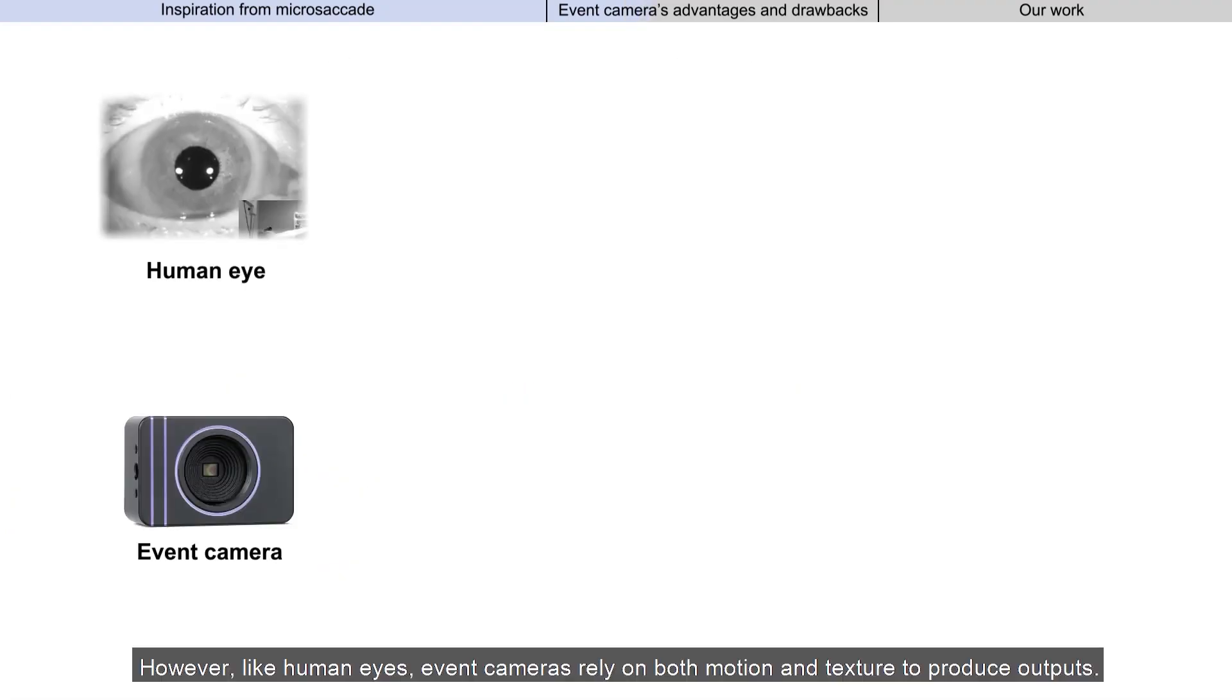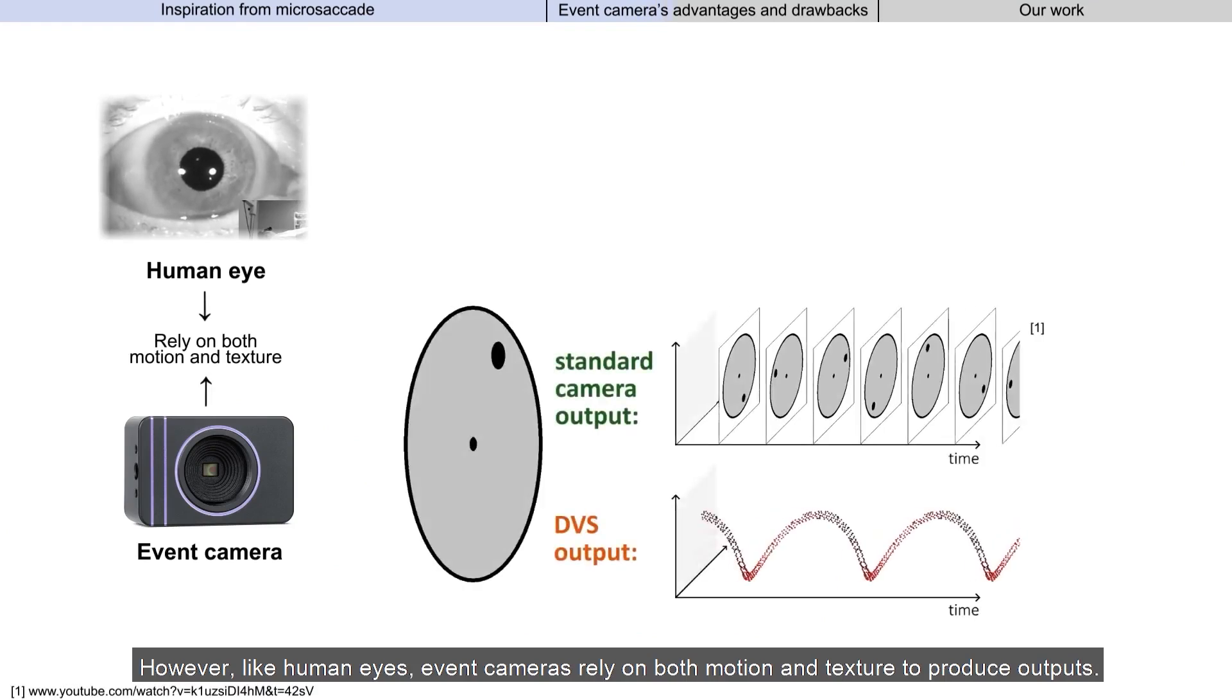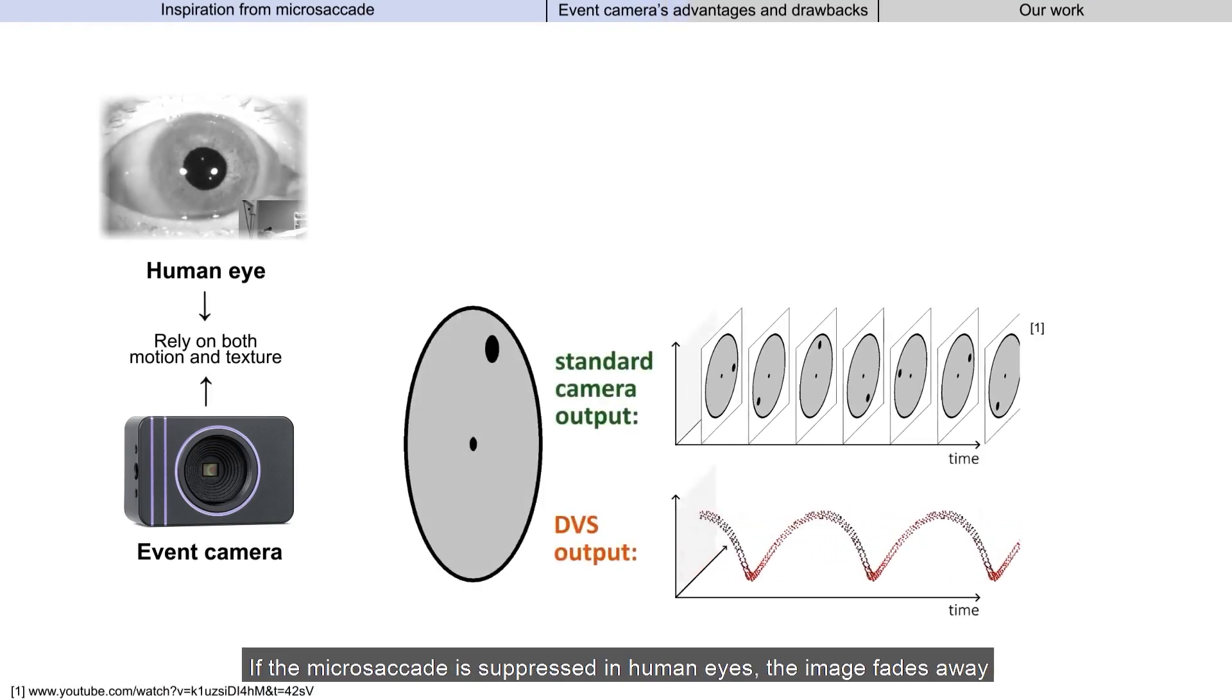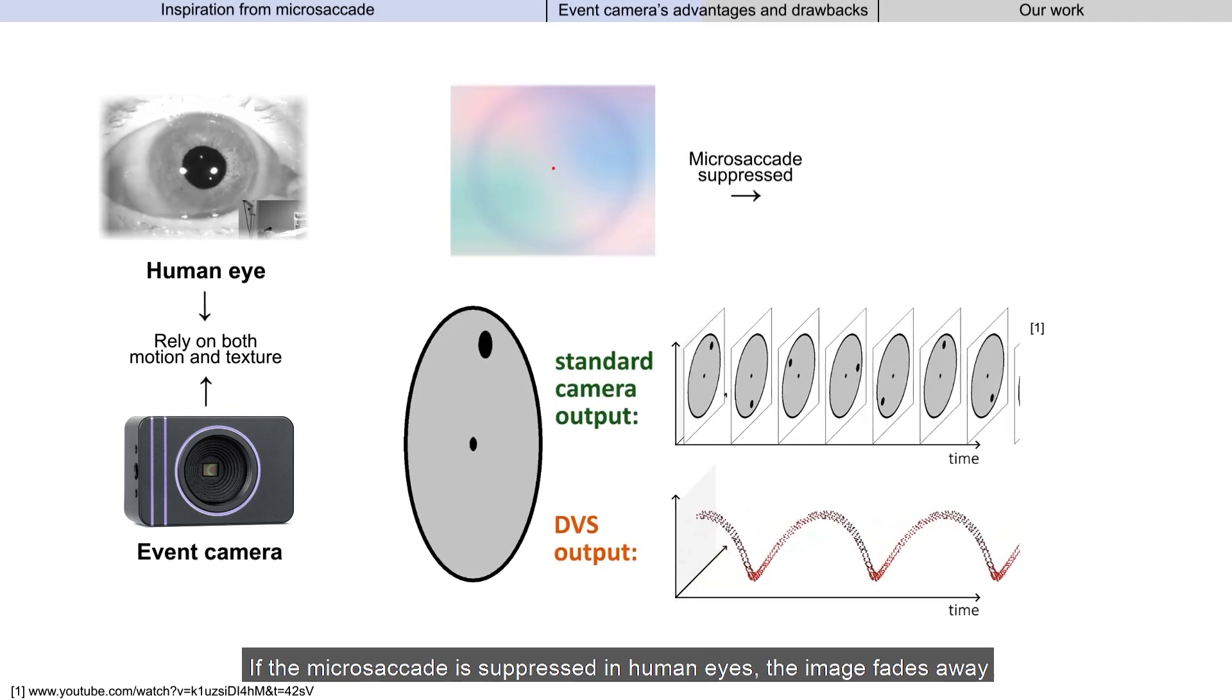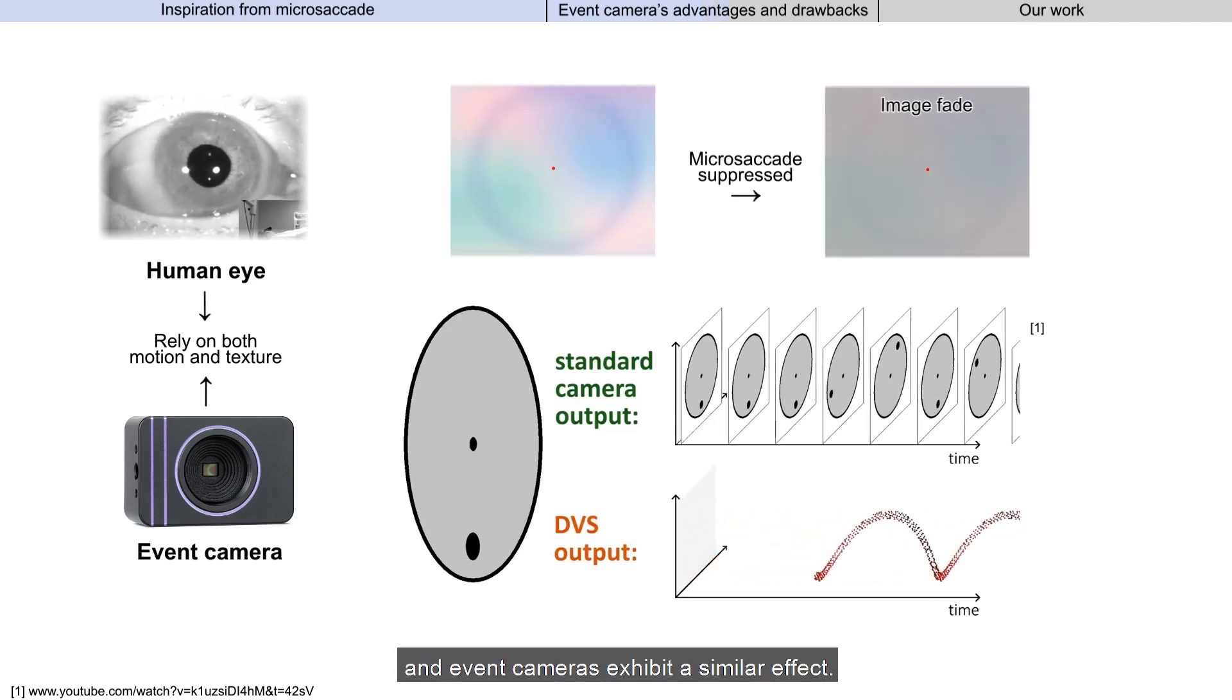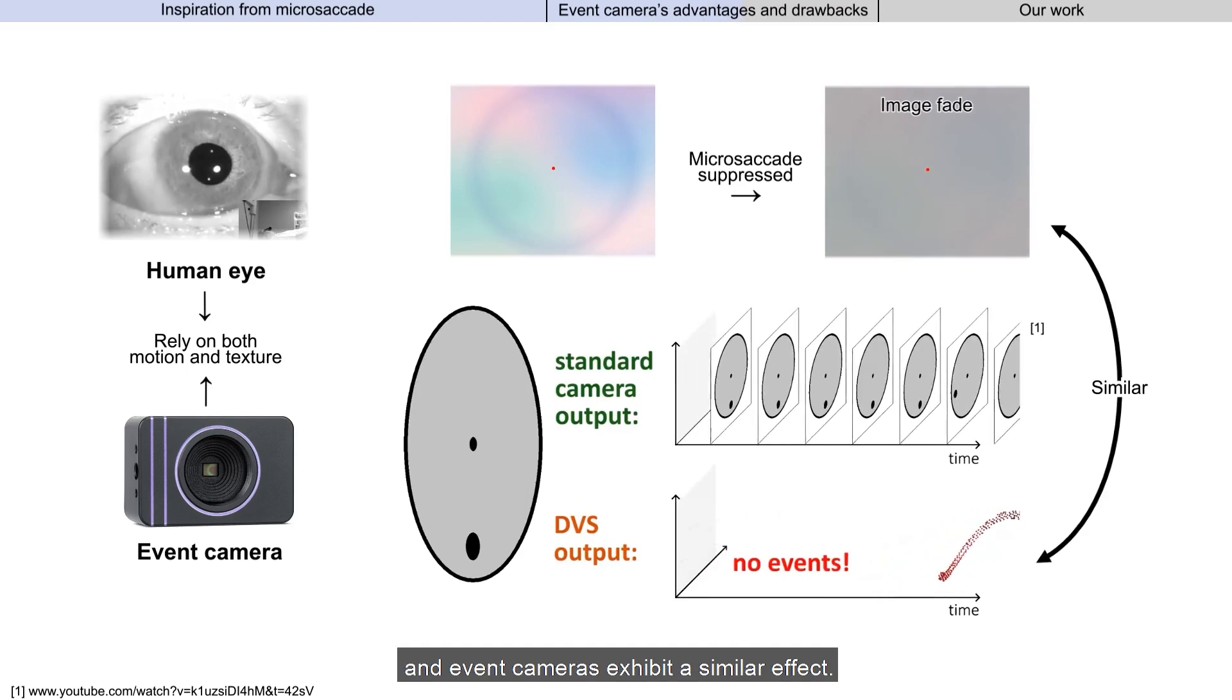However, like human eyes, event cameras rely on both motion and texture to produce outputs. If the microsaccade is suppressed in human eyes, the image fades away, and event cameras exhibit a similar effect.